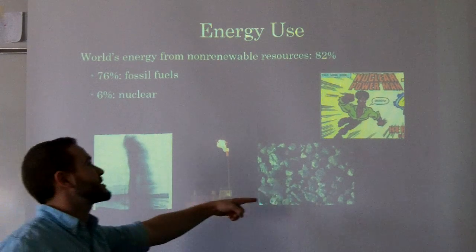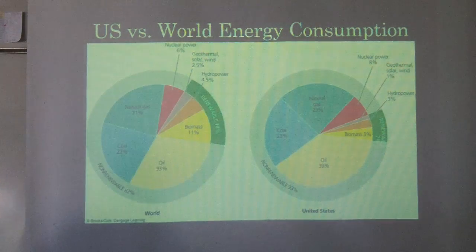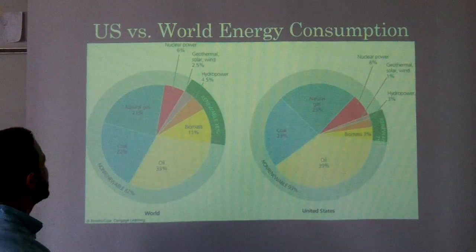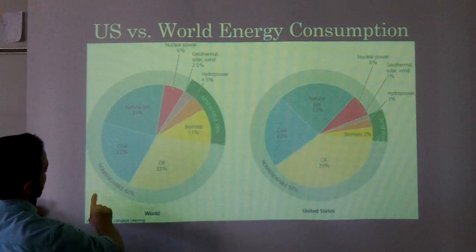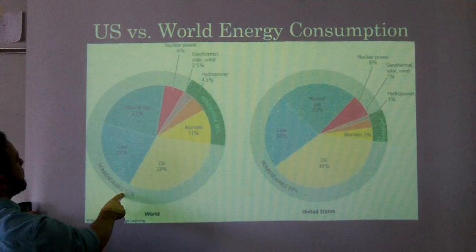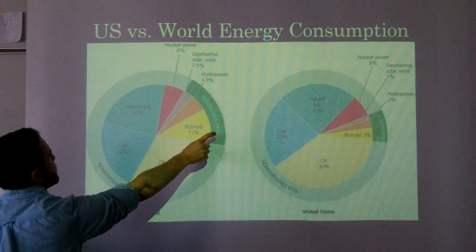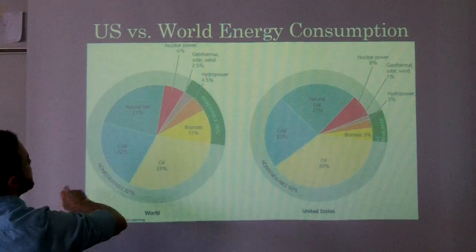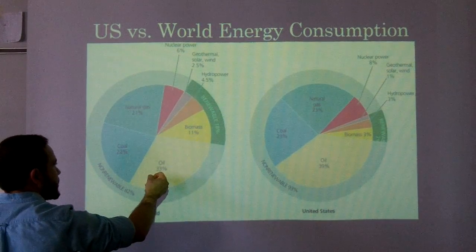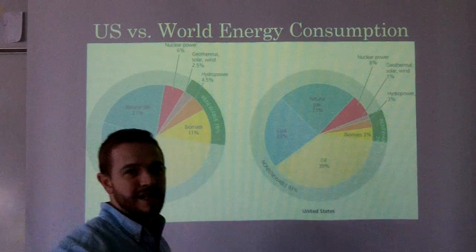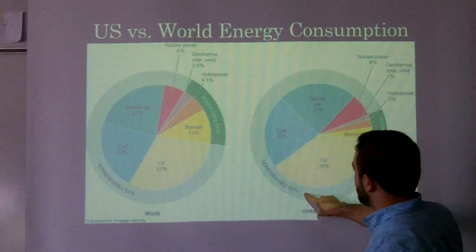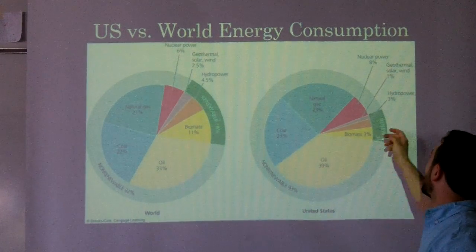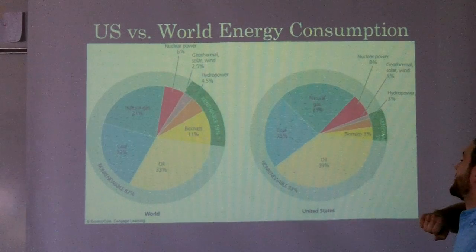We've got oil, natural gas, coal, and nuclear power. Now, U.S. versus world energy consumption. The world as a whole: 82% comes from non-renewable and 18% comes from renewable. Nuclear power providing 6%, natural gas 21%, coal 22%, oil 33%, biomass 11%. The United States comes in at 93% — 11% higher than the world average — from non-renewable, and only 7% from renewable.